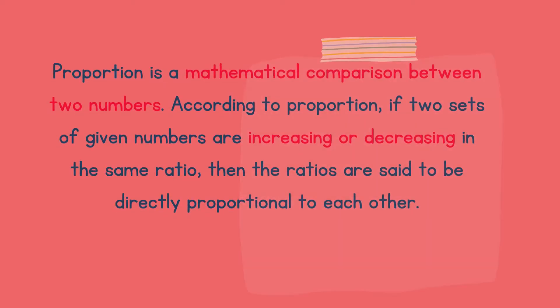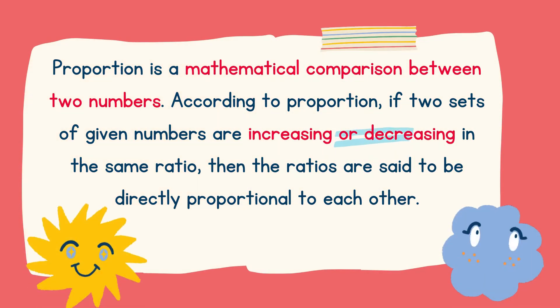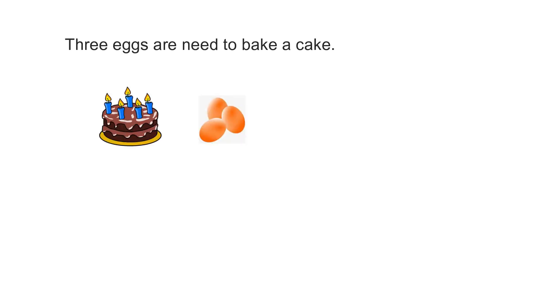What is proportion? Proportion is a comparison between two numbers. According to proportion, if two sets of given numbers are increasing and decreasing in the same ratio. For example, let's say to bake a cake, we need three eggs.